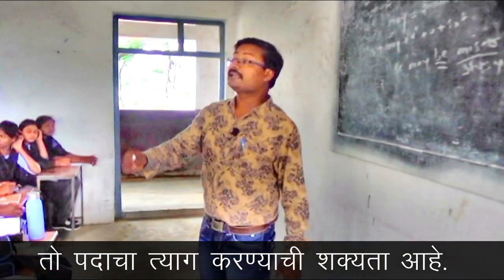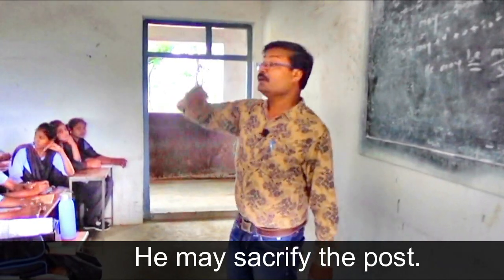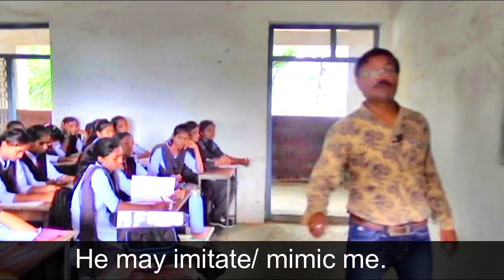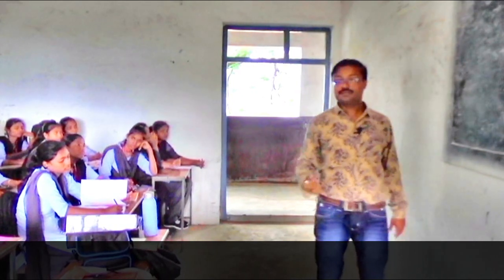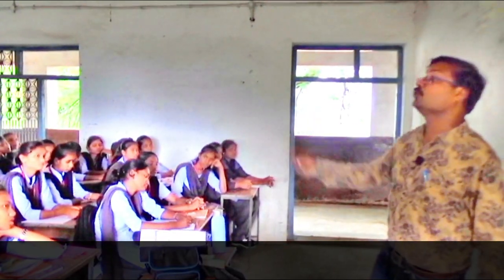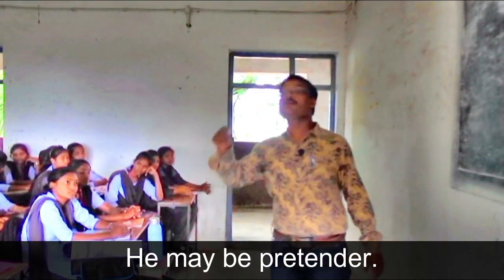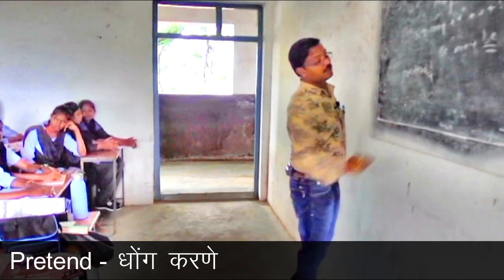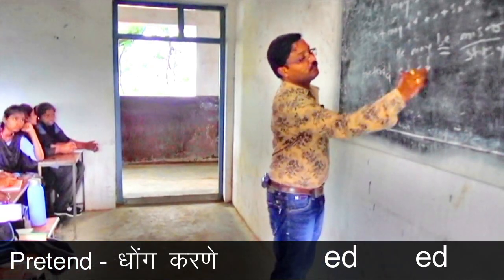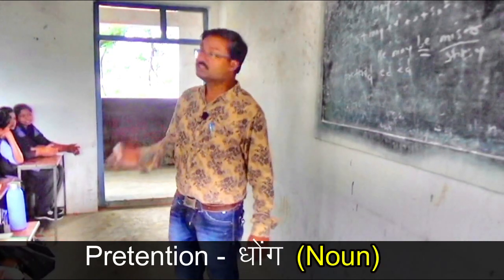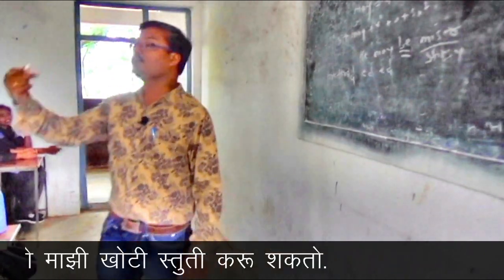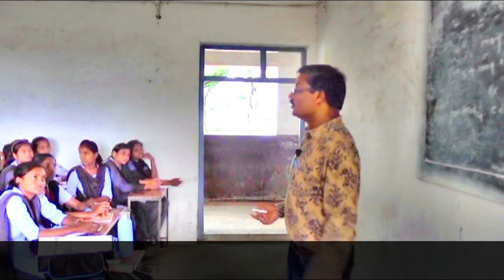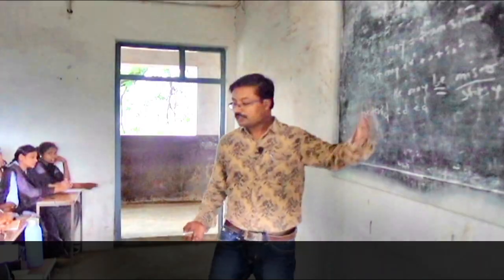'Toh pahadacha tyak karne ji shakketa hai' — He may sacrifice post. 'Toh maaji nakkal karne ji shakketa hai' — He may imitate me — or mimic me — imitate means anu karang karne. 'Toh dhong gi asu shakto' — He may be a pretender. 'Toh dhong karu shakto' — He may pretend. Pretend means dhong karne, second form: pretended, third form: pretended, noun form: pretension.